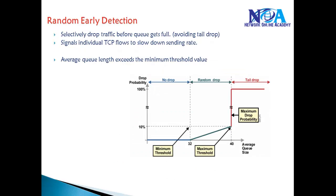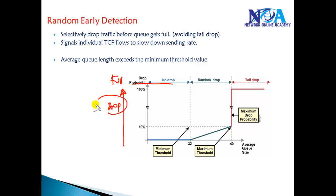To overcome this, we can implement a congestion avoidance mechanism called Random Early Detection. What it does is selectively drop traffic before the queue is full. Before the queue actually reaches its maximum size, it will start dropping packets. This signals individual TCP flows to slow down their sending rate, which also avoids TCP synchronization issues.